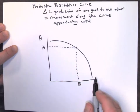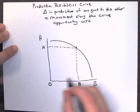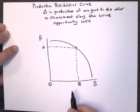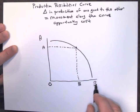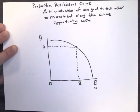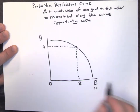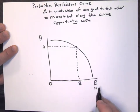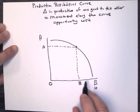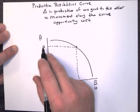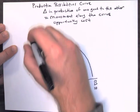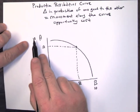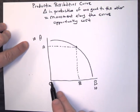Anytime you have a y and x-axis, remember this is going to be zero, and we increase right and decrease left. So if we wanted to produce all of item B, say we could only get 10 of those, that means we would get zero of item A. And say the most we could get would be 10 of item A, that means we would get zero of item B.